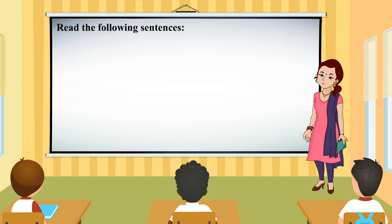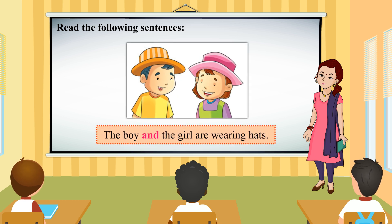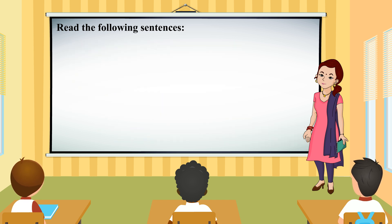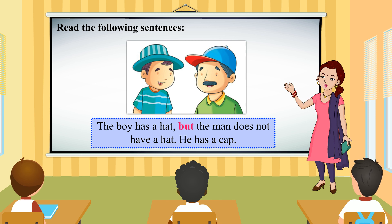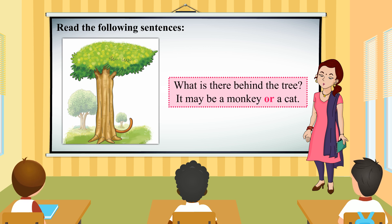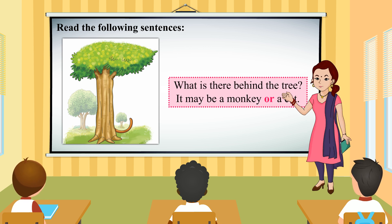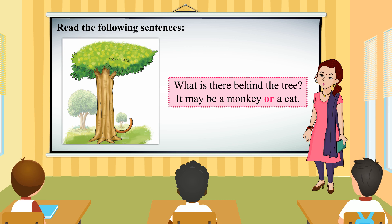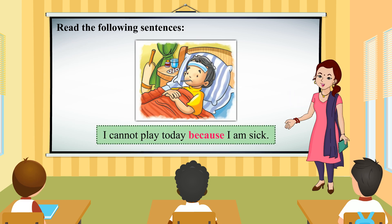Read the following sentences. The boy and the girl are wearing hats. The boy has a hat, but the man does not have a hat. He has a cap. What is there behind the tree? It may be a monkey or a cat. I cannot play today because I am sick.